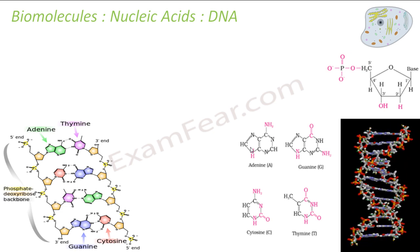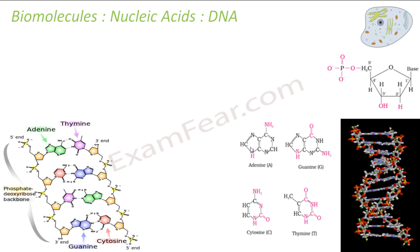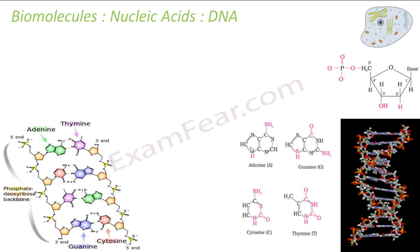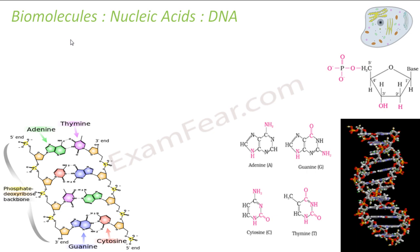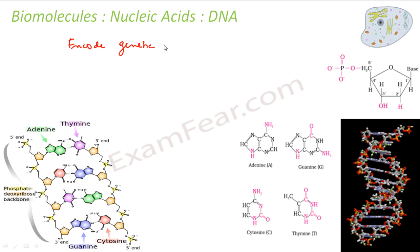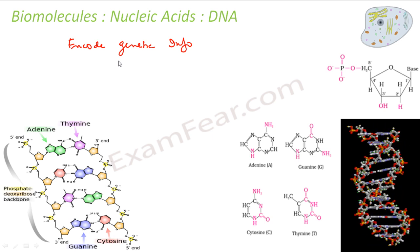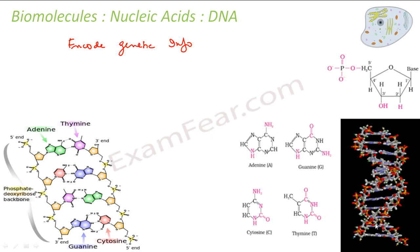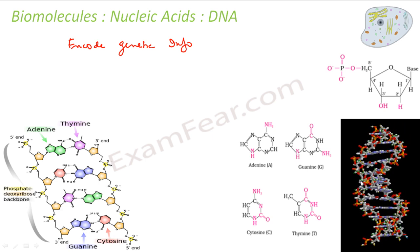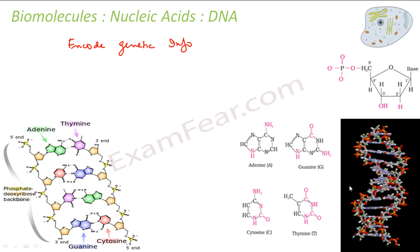DNA encodes genetic instructions used in the development and functioning of all living organisms. Whether you talk about humans, cats, mice, dogs, lions, monkeys, or birds — any living organism — they all have DNA. They are double-stranded, forming a double helix, and consist of two long polymers made up of simple units called nucleotides.